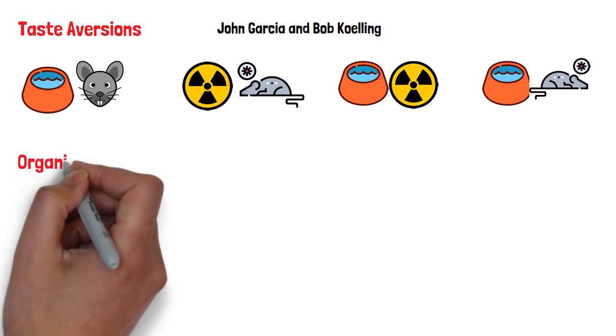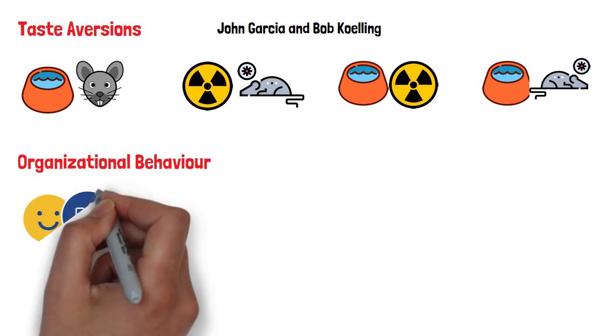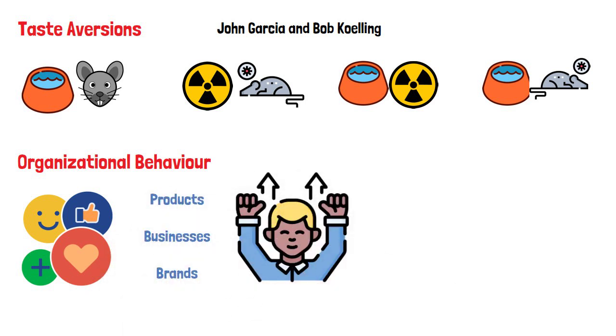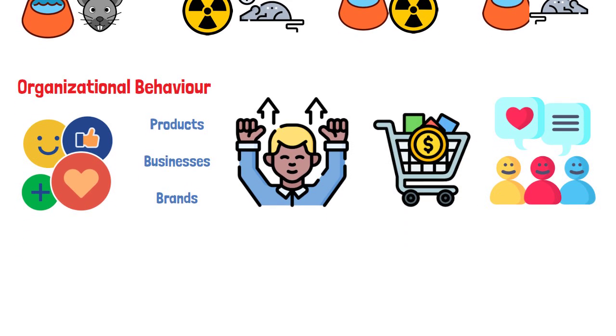Organizational behavior. Classical conditioning can also have applications in business and marketing. For example, it can be used to help people form favorable attitudes toward products, businesses, or brands. People may be motivated to purchase certain products because they have developed a favorable opinion of them due to classical conditioning.